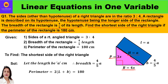The hypotenuse being the longer side of the rectangle means the hypotenuse is actually the length of the rectangle. Further, they are saying the breadth of the rectangle is 4/5 of its length. So if the length is 'a' centimeters, I can say the breadth will be 4/5 of 'a' centimeters.